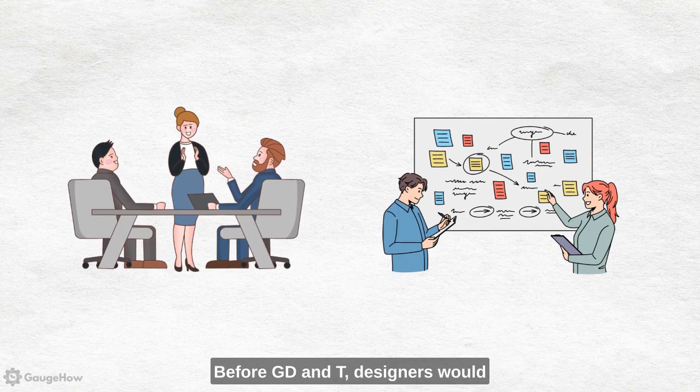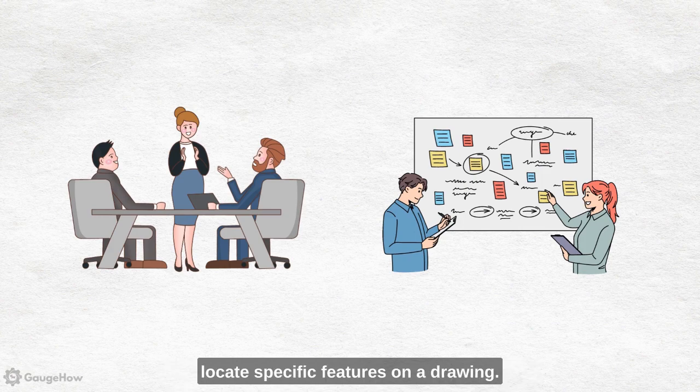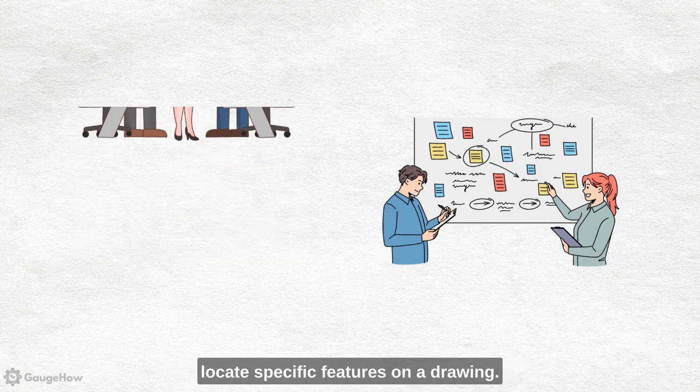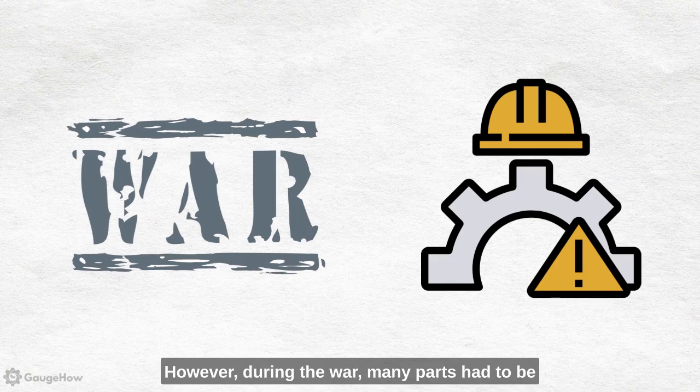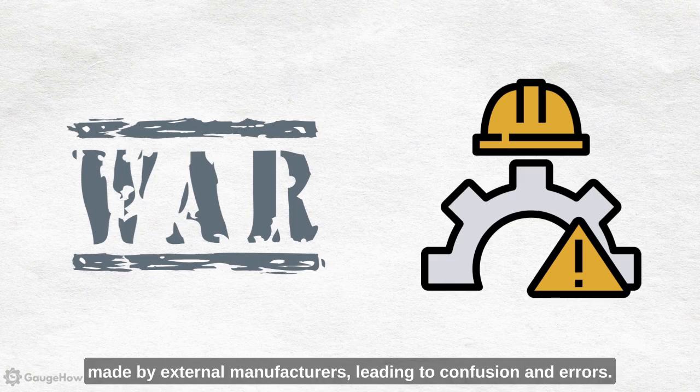Before GD&T, designers would discuss with manufacturing personnel how to locate specific features on a drawing. However, during the war, many parts had to be made by external manufacturers.